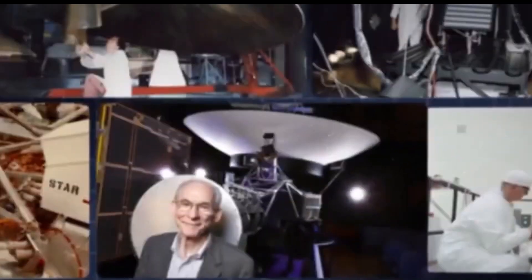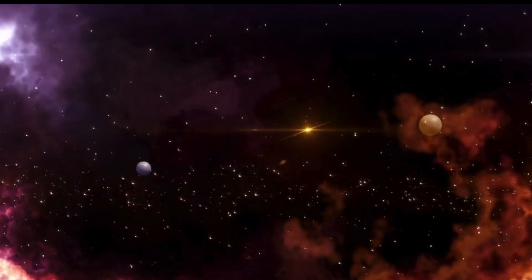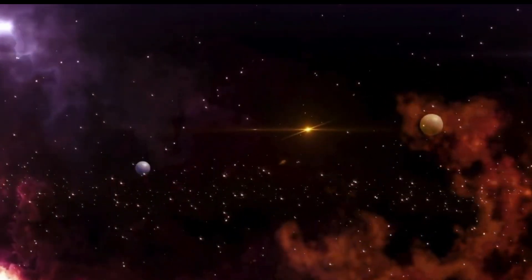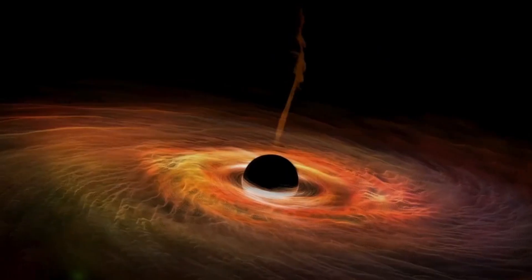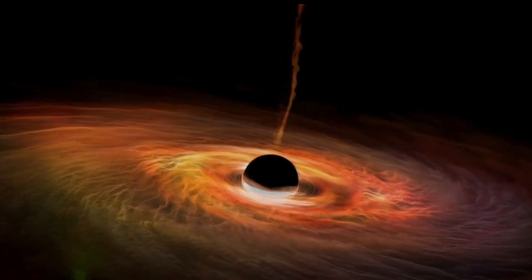When this happens, the fusion of neon with iron absorbs energy instead of releasing it. Because there is nothing to oppose the star's very powerful gravity, when iron begins to fuse, the star collapses in on itself, giving rise to a supernova explosion.